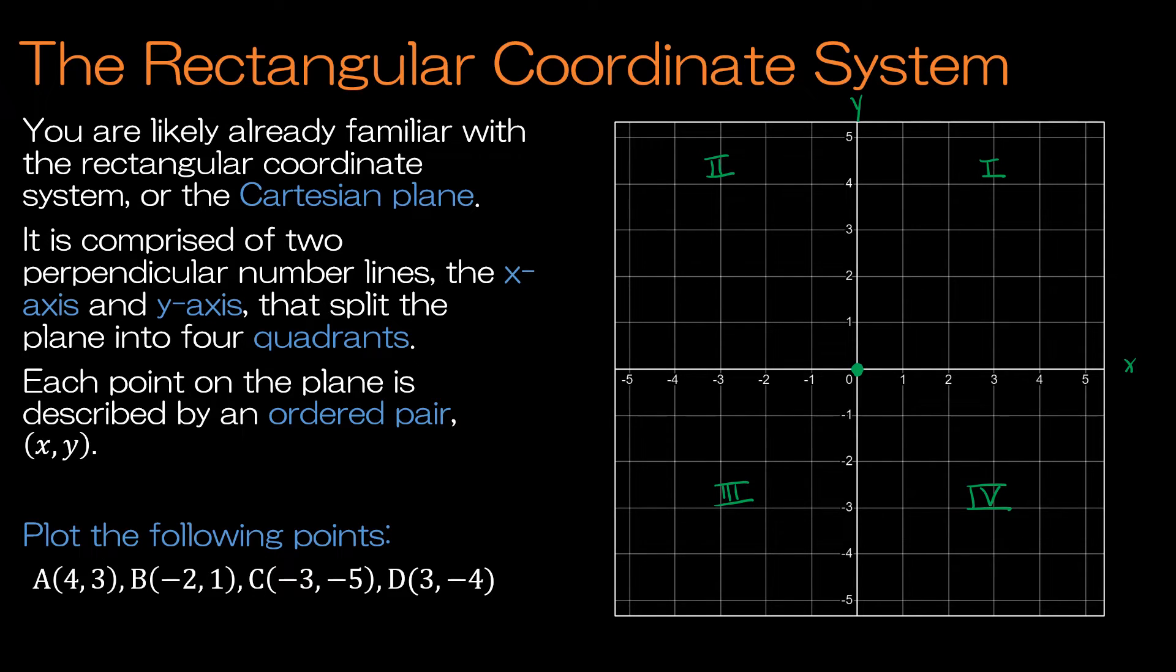The ordered pairs give us the x-coordinate followed by the y-coordinate, so the origin is at point (0, 0).